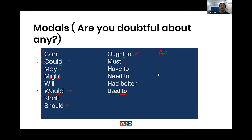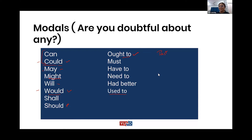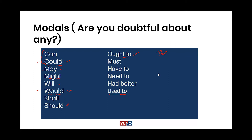Now let's come to shall. When do we use shall as a modal? For future time reference, that's a different case. As a modal, shall is used to make a suggestion: 'Shall I say something now? Shall I start? Shall I do that?' — this is making a suggestion, not asking permission. Shall is also used to make an offer: 'Shall I get you something? Shall I wait for you?'